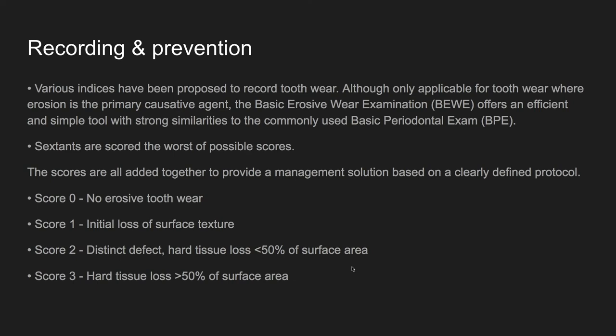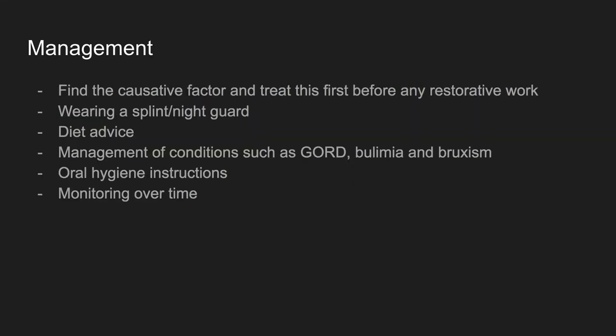So how do we record tooth wear and give preventative advice? Tooth wear in the UK is mainly recorded using the Basic Erosive Wear Examination index, known as BEWE. Although specifically made for erosion, it can certainly be applied to other methods of tooth surface loss. The mouth is divided into six equivalent divisions, just like BPE, and each division is scored between zero and three. Over time you can monitor this to see if the patient is responding to your preventative advice and what steps to take depending on their BEWE score.